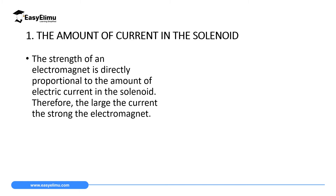The first factor that affects the strength of an electromagnet is the amount of current in the solenoid. The strength of an electromagnet is directly proportional to the amount of current in the solenoid. So if you have a large amount of current, then the electromagnet which will be formed will be very strong. We can draw a diagram to demonstrate that.